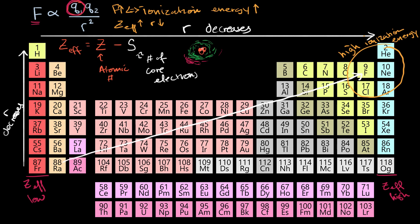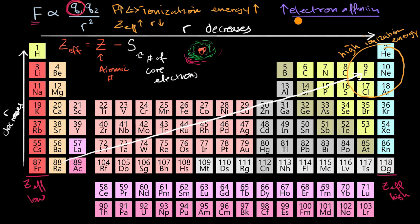Another trend, in some ways the opposite, is electron affinity. While ionization energy is about the energy it takes to remove an electron, electron affinity is about how much energy is released when we add an electron to a neutral version of a given element. High electron affinity elements really want electrons, so they should have a high Coulomb force — meaning high effective Z and low R. You'd expect a similar trend to ionization energy, with high electron affinities in the top right, especially the halogens, and low electron affinities at the bottom left.